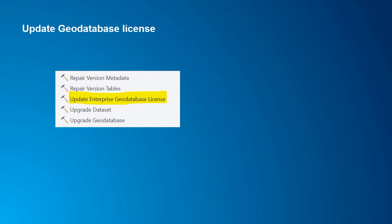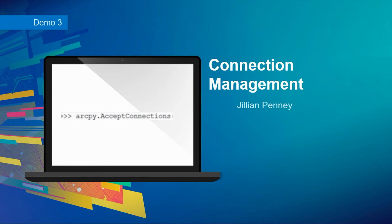While we're talking about connections, I'd also like to bring to your attention the Update Enterprise Geodatabase License tool. If you have an ELA license where your server license expires on a certain day, as a geodatabase administrator you can proactively run this tool even before the license expires so that users don't get disconnected. This tool will update the license to the next expiration date.